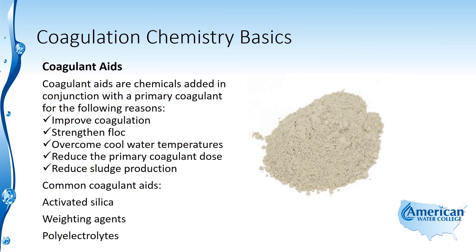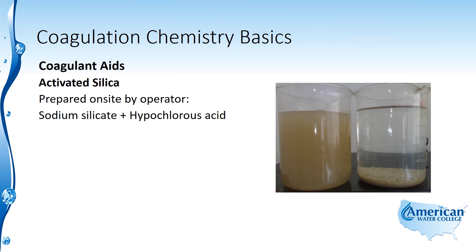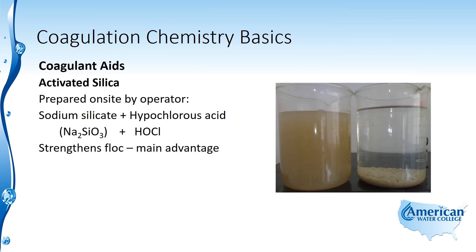We're going to look at activated silica. Activated silica is prepared on site by the operator by combining sodium silicate and hypochlorous acid. The sodium silicate is delivered to the plant and the operator mixes it with hypochlorous acid to form activated silica. It is used primarily to strengthen the floc — that's the main advantage — keeping the floc from breaking apart or shearing so that it will settle out.